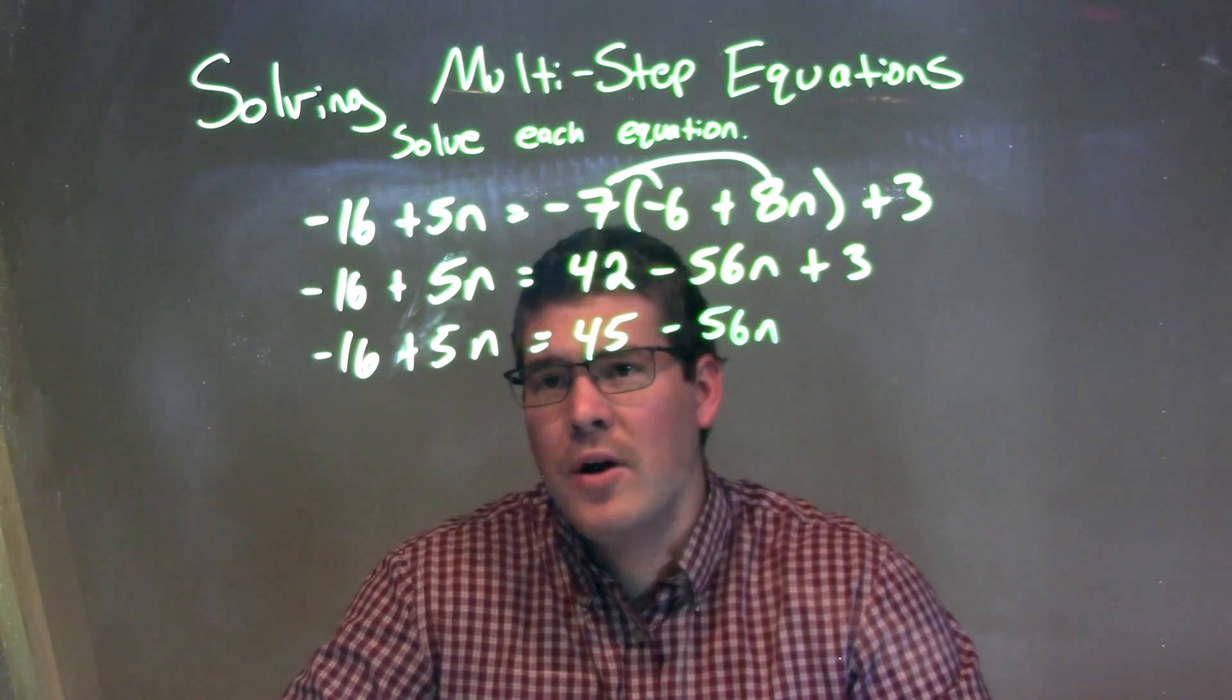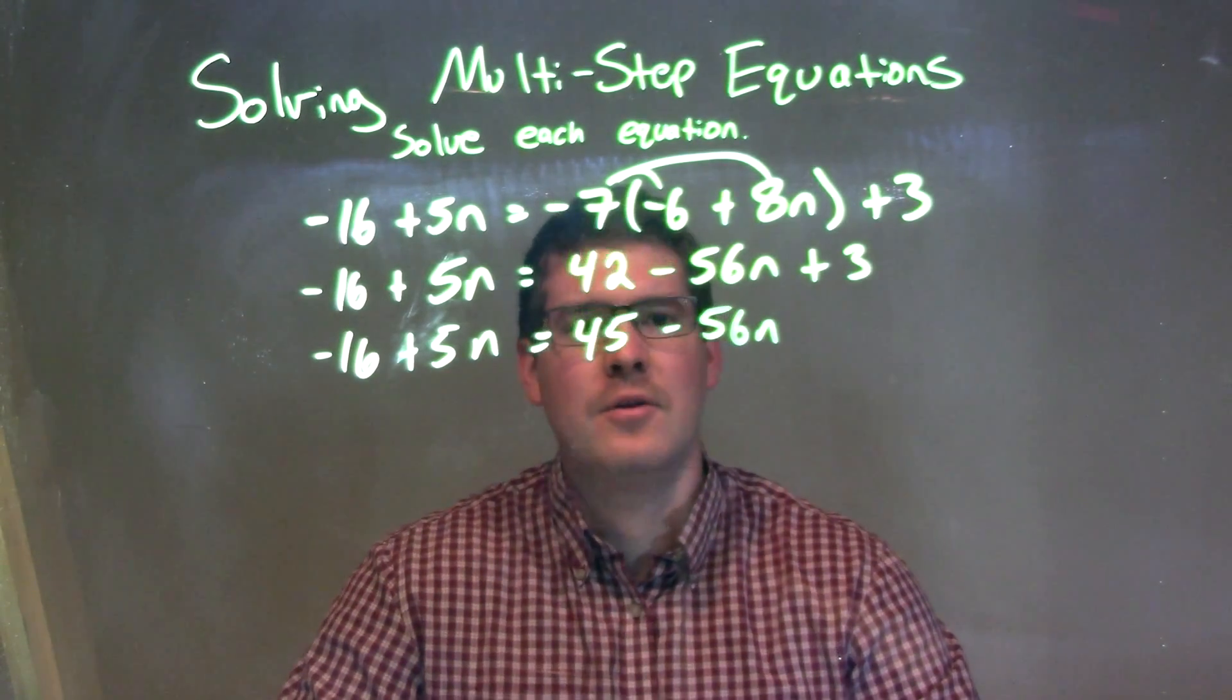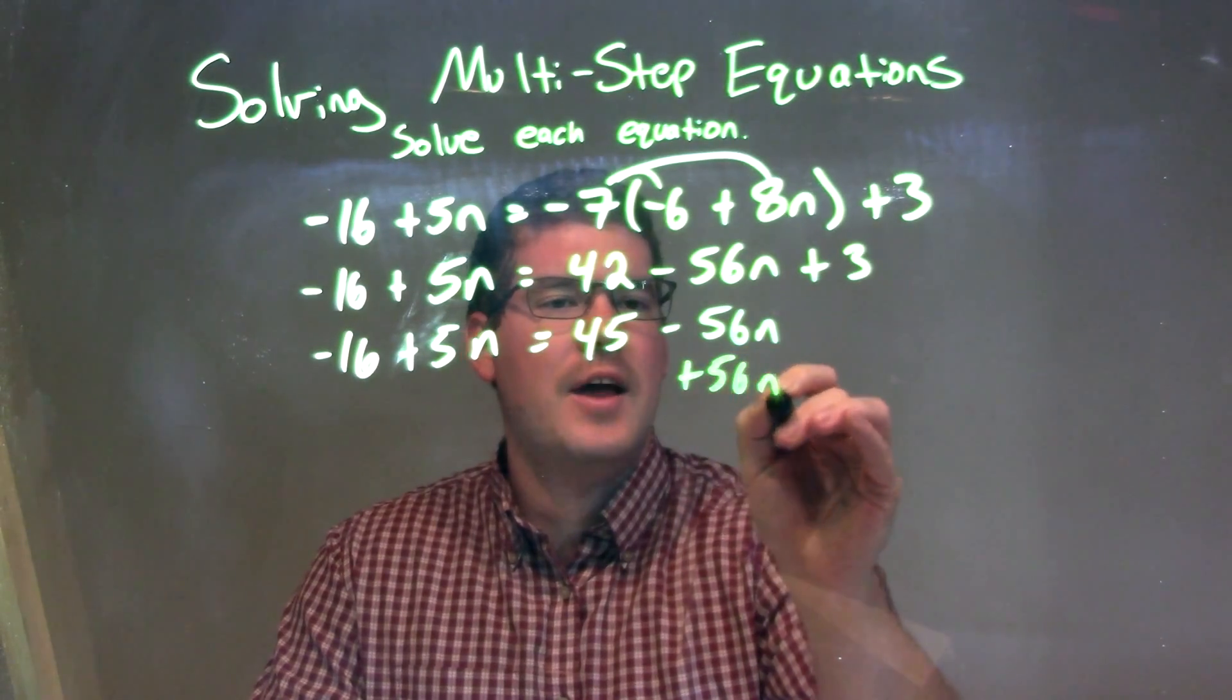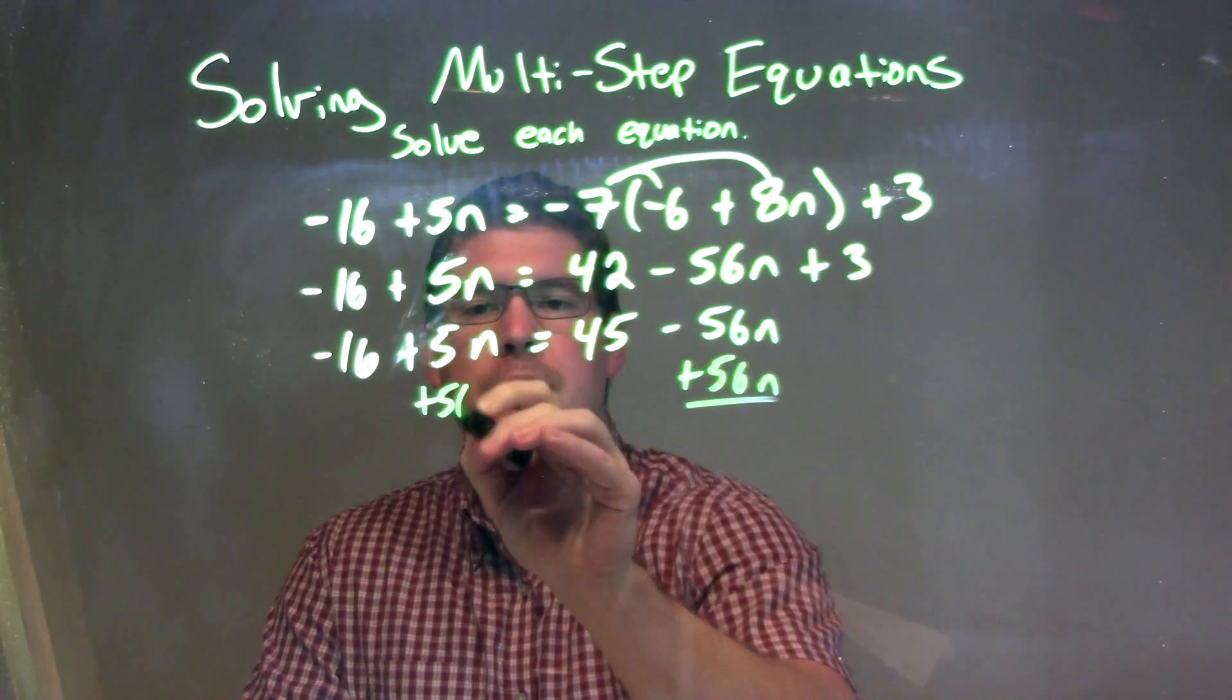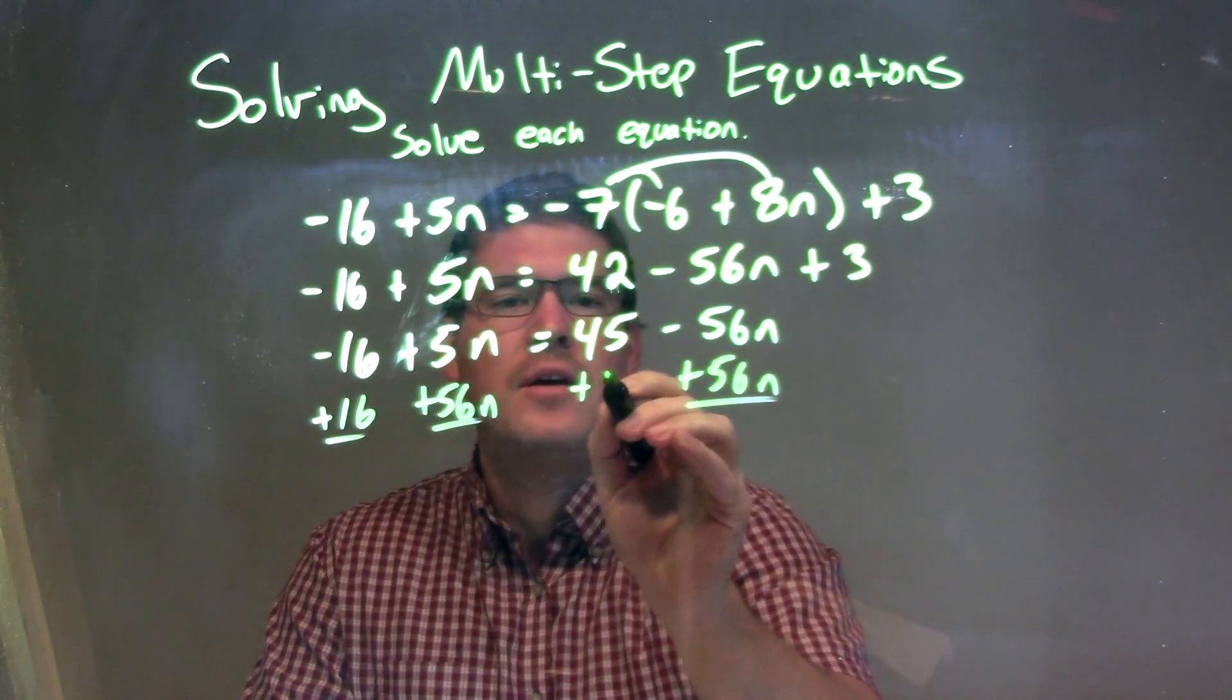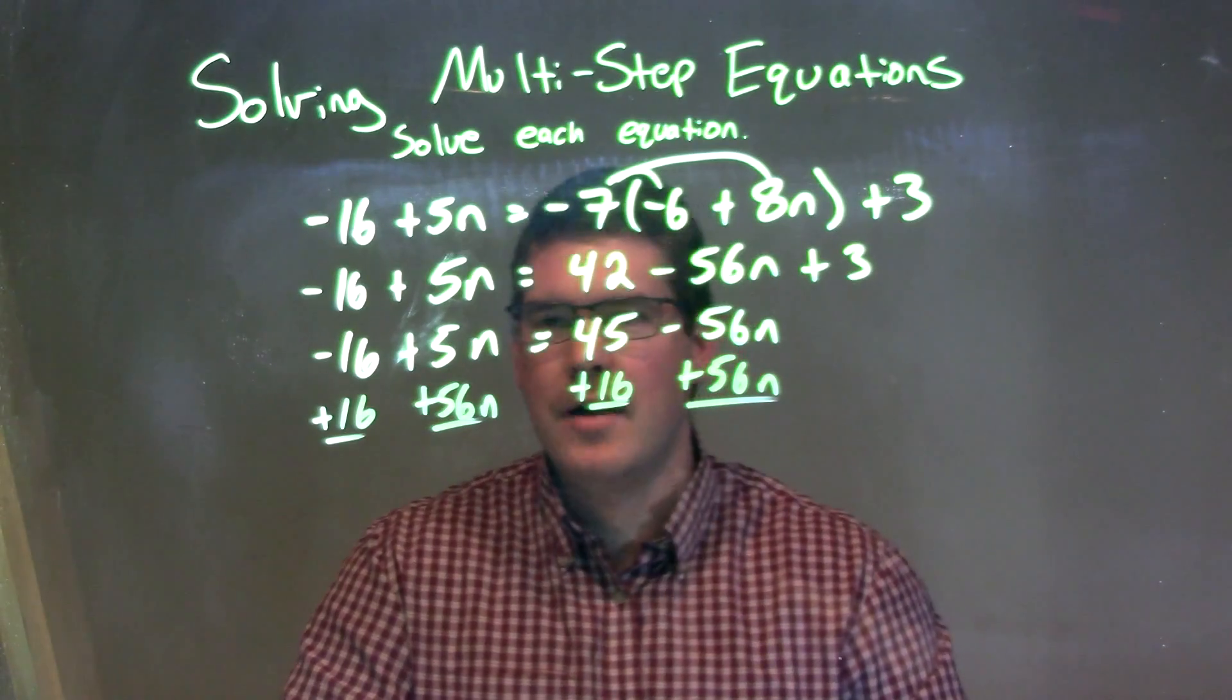Now it's up to you where you want to go with this. What I'm going to do, actually, is bring my variables to the left here. I'm going to add 56n to both sides and add 16 to both sides. This way, I'll keep everything positive and my variable's already on my left.